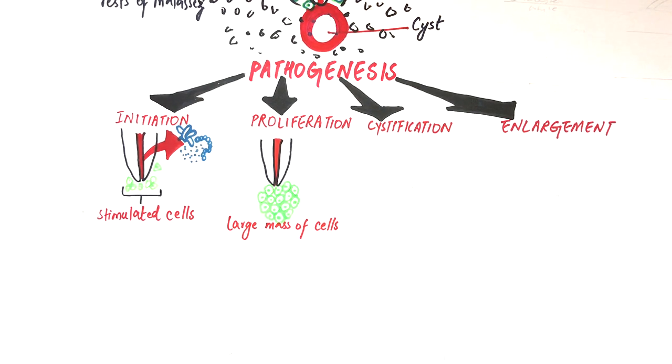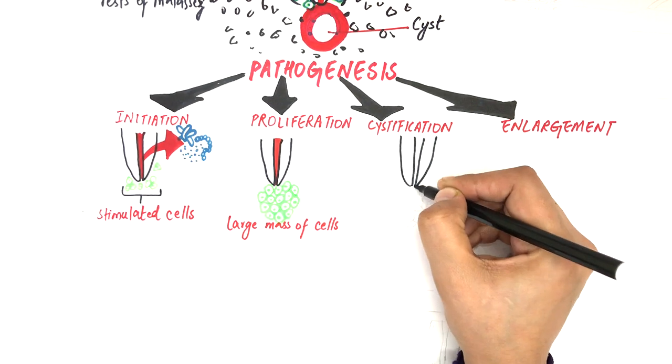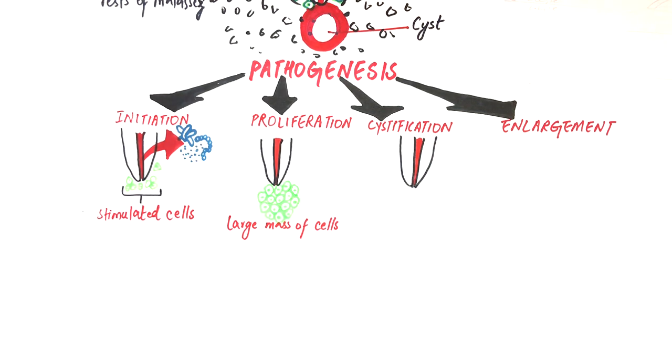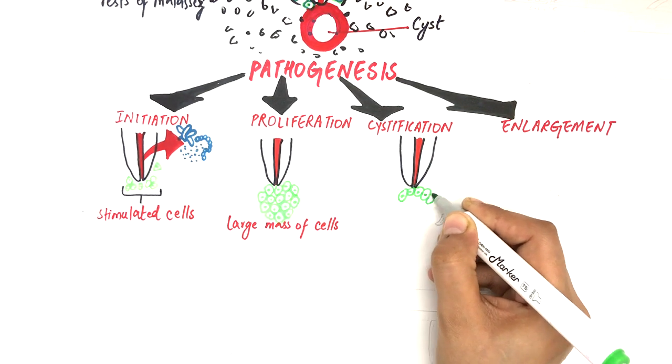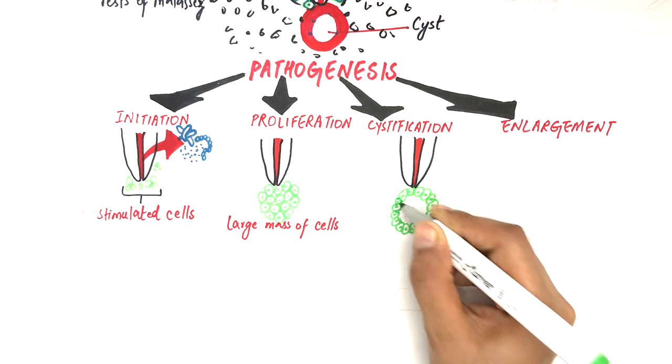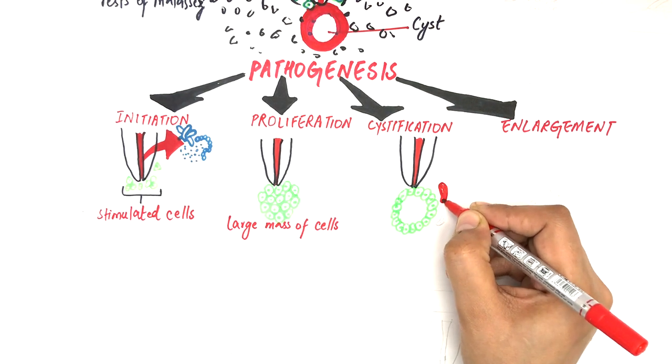In the phase of cystification, the peripheral cells of the epithelial mass get adequate nutritional supply from the surrounding blood vessels. But the central cells of the mass are deprived of any nutritional supply.